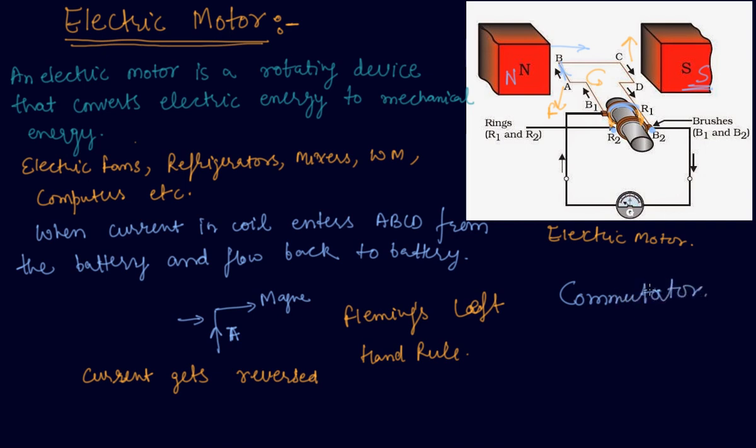So this is how the current always reverses its direction one by one. And the reversal of the current also reverses the direction of the force on the two arms AB and CD, thus the arm AB of the coil that was earlier pushed down is now pushed upwards and CD will now be pushed downwards. Therefore the coil and the axle again rotate half a turn more in the same direction, thus reversal of the current continues. So this process goes on repeating itself. This is how the electric motor works.